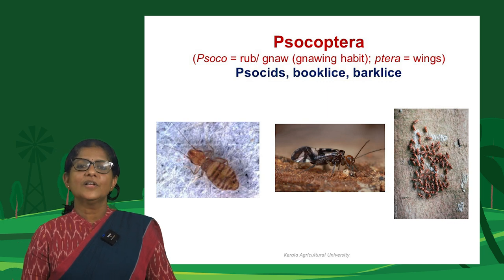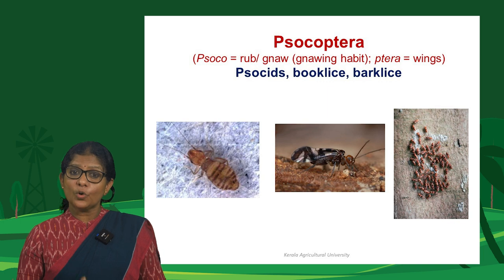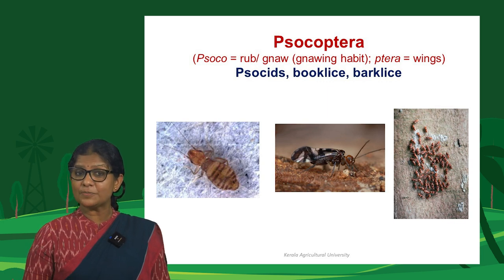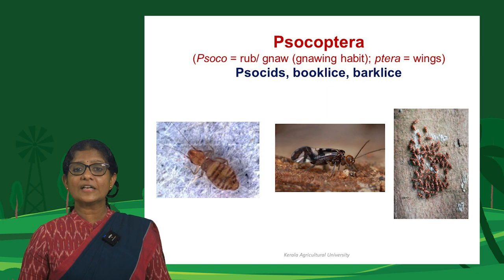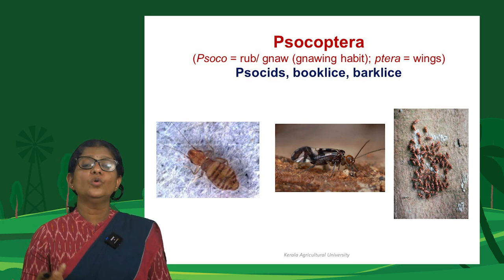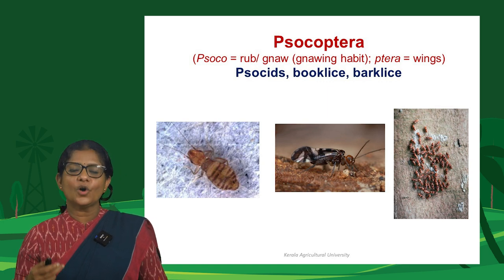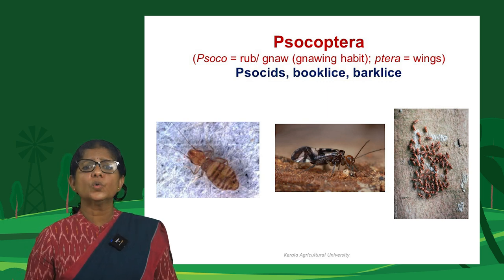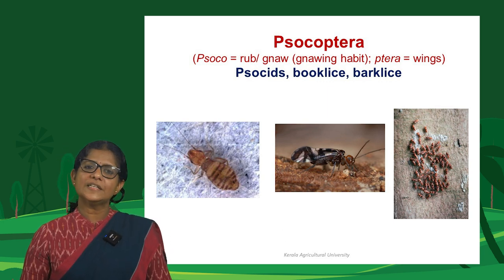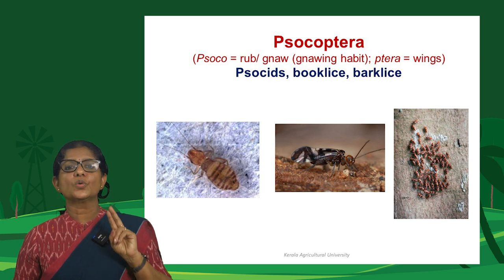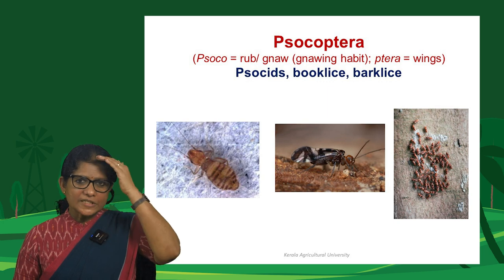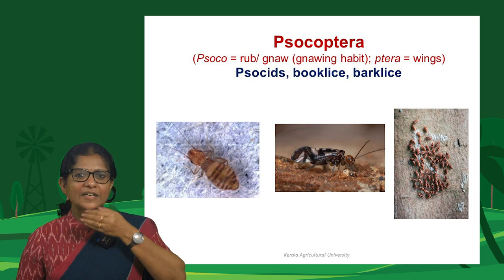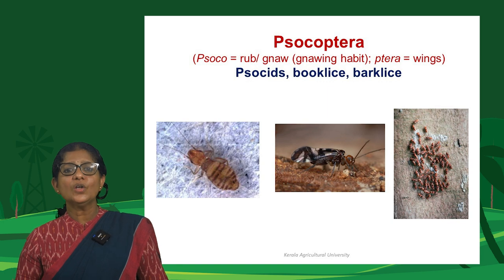Psocoptera are psocids, also called booklice or barklice. Booklice are found indoors associated with books, museum specimens, and insect collections, while barklice are found outdoors on tree bark feeding on fungi, lichens, and detritus. The word Psocoptera is derived from 'psoco' (to rub or gnaw) — they have a bulbous forehead and keep gnawing the substrate.